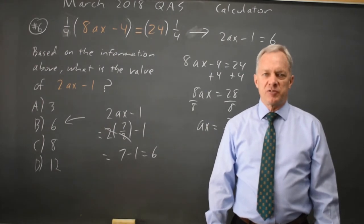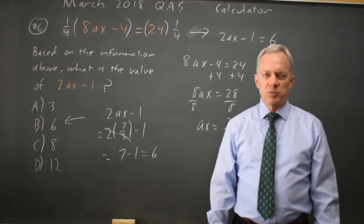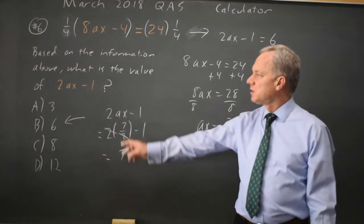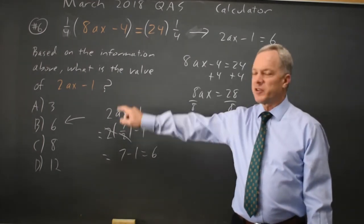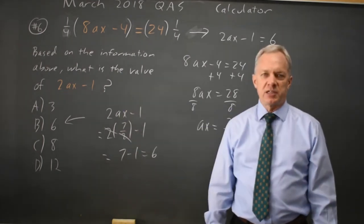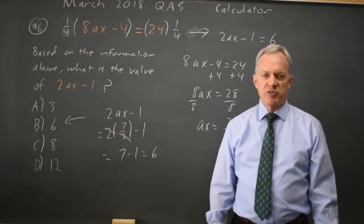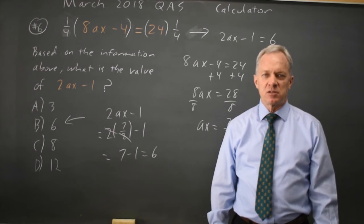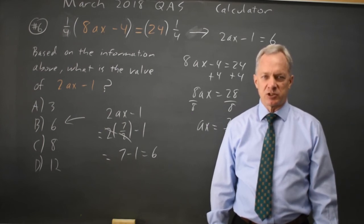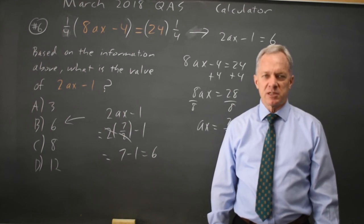College Board often does this sort of thing, and particularly when they ask for something very unusual, like the value of 2ax minus 1, spend maybe 5 seconds looking to see if there's some special trick or shortcut. After that, just do the regular algebra because it's not much slower.